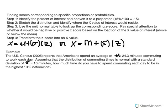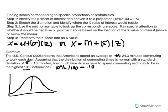Here's an example. The U.S. Census 2005 reports that Americans spend an average of 24.3 minutes commuting to work each day. Assuming the distribution of commuting times is normal with a standard deviation of 10 minutes, how much time do you have to spend commuting each day to be in the highest 10% nationwide? Step one: identify the percent of interest — that's 10%. Convert it to a proportion by dividing by 100, giving us 0.10. We sketch our distribution with the mean of 24.3 in the center, and we want to find what x equals for the top 10% of commuting times.